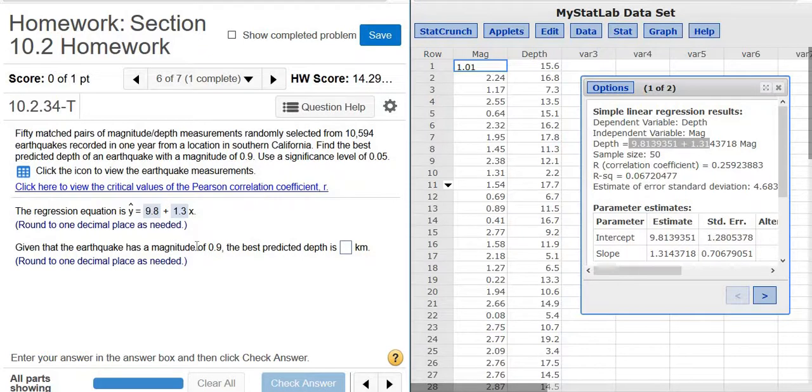Given that the earthquake has a magnitude of 0.9, we want to predict the death. Okay, so it's asking us to make a prediction for 0.9, for x equals 0.9. Here's where you have to be super careful. So first we have to make sure that r is significant.